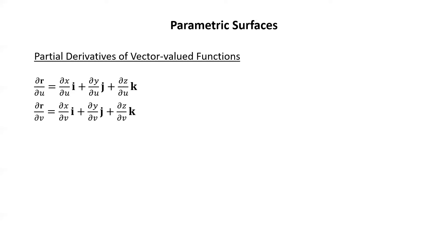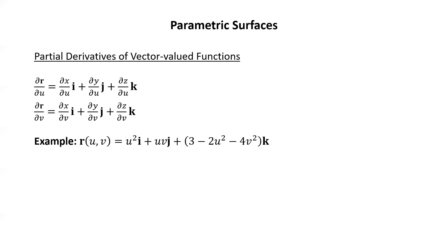Similarly, the partial of r with respect to v is computed the same way, differentiating each component with respect to v. Here's a vector-valued function — go ahead and pause the video, write down the partial derivatives, and then resume to check your answers. We have r of uv equals u squared i plus uv j plus (3 minus 2u squared minus 4v squared)k.